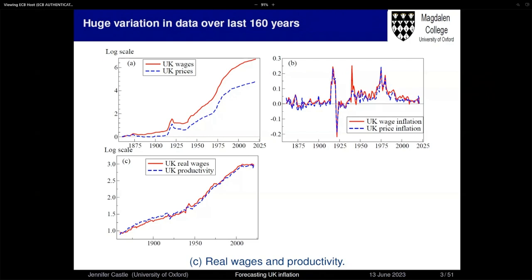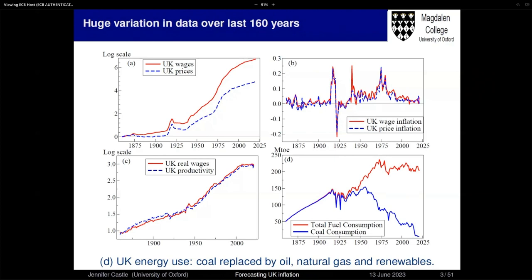Note the flatlining post-financial crisis — a real issue in the UK regarding productivity. Another interesting aspect is what's happened to energy use. Total fuel consumption is the red line, and initially it was almost all coal consumption, but then we diversified into gas, oil, and since then renewables. Coal consumption is now near zero. There's been a flatlining of total fuel consumption due to big efficiencies since the 1960s. This is the kind of data we'll use to identify contributing factors to inflation.